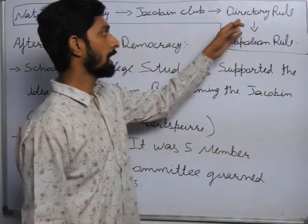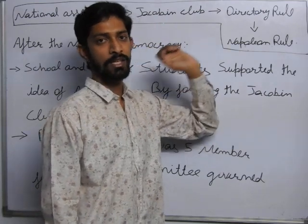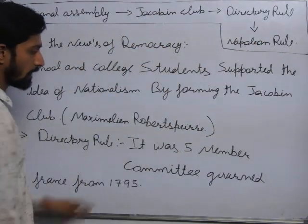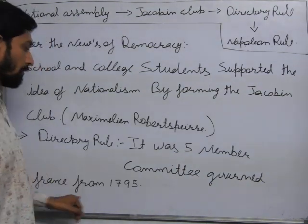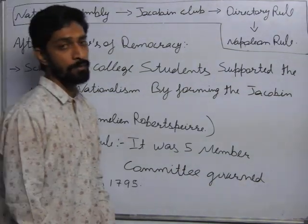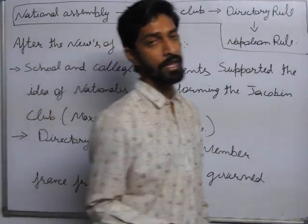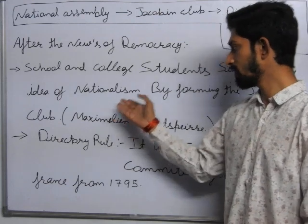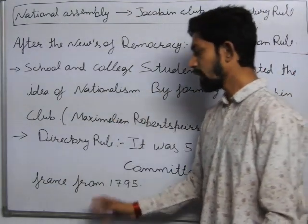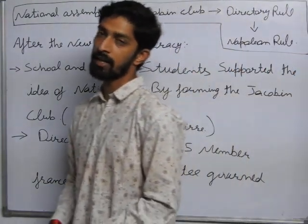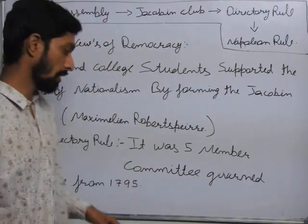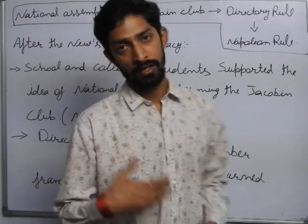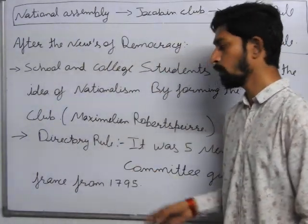Then what happened? A Directory Rule started. The Directory Rule was a five-member committee that governed France from 1795. There were five members in this committee. Which committee started to rule France? In 1795.